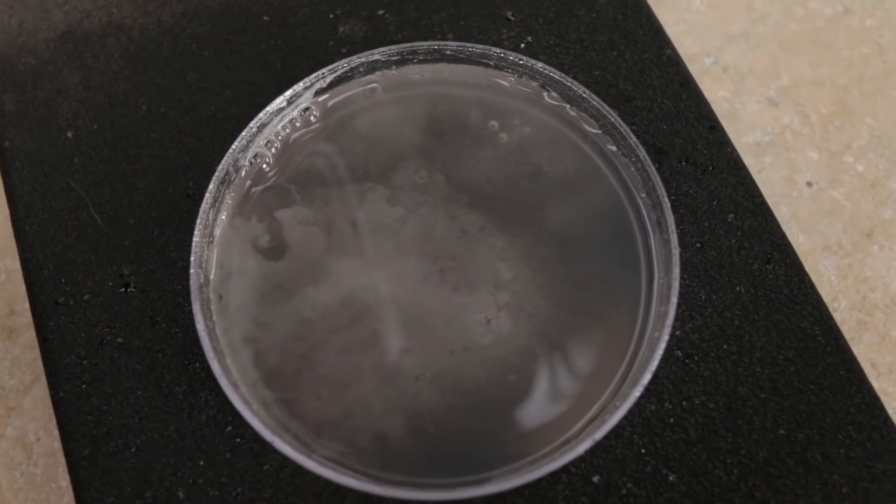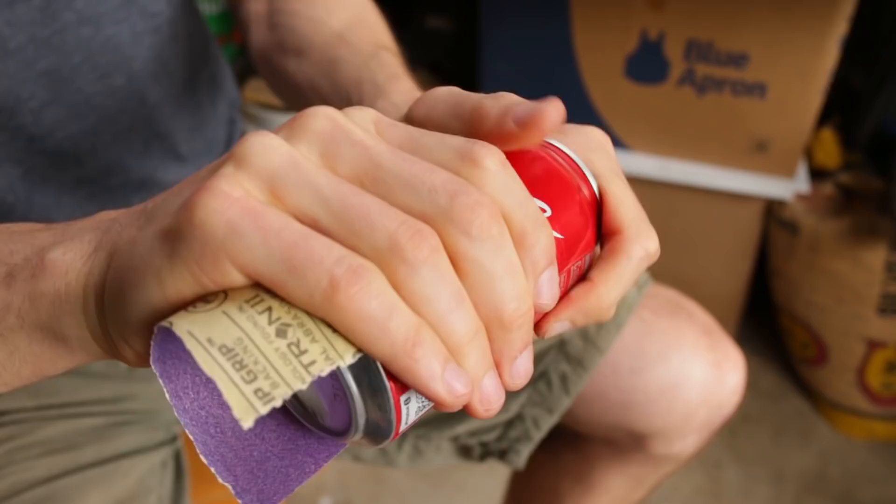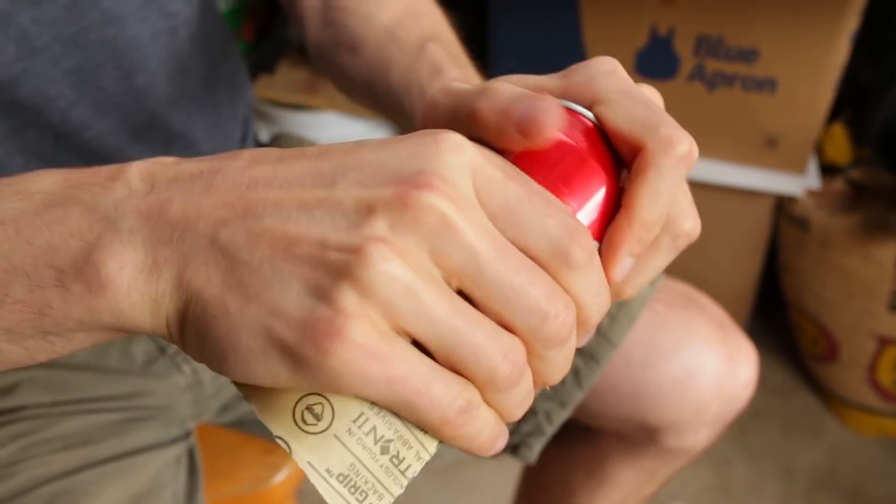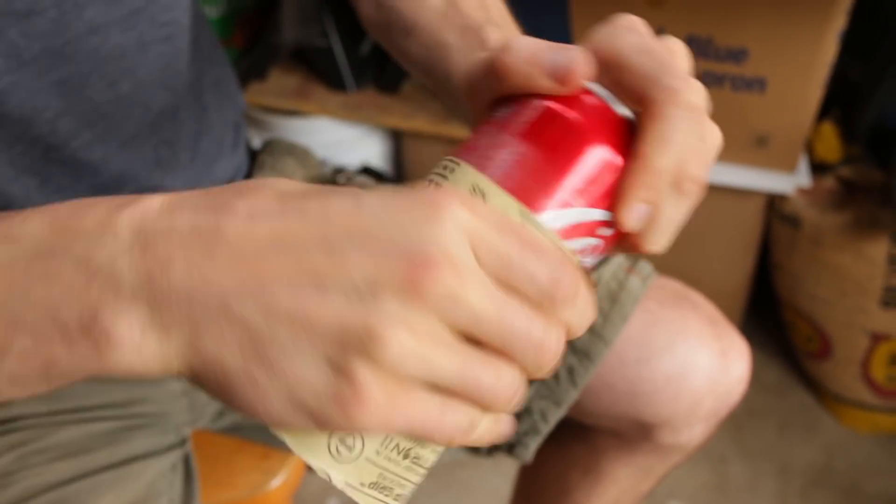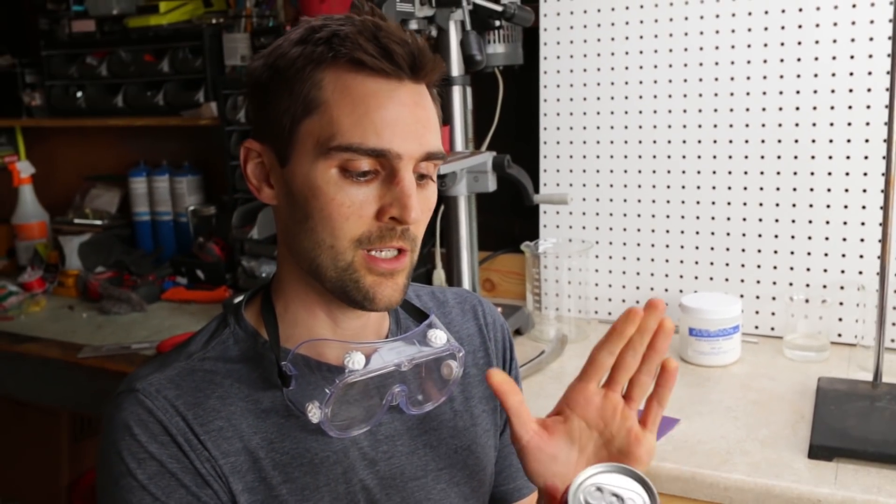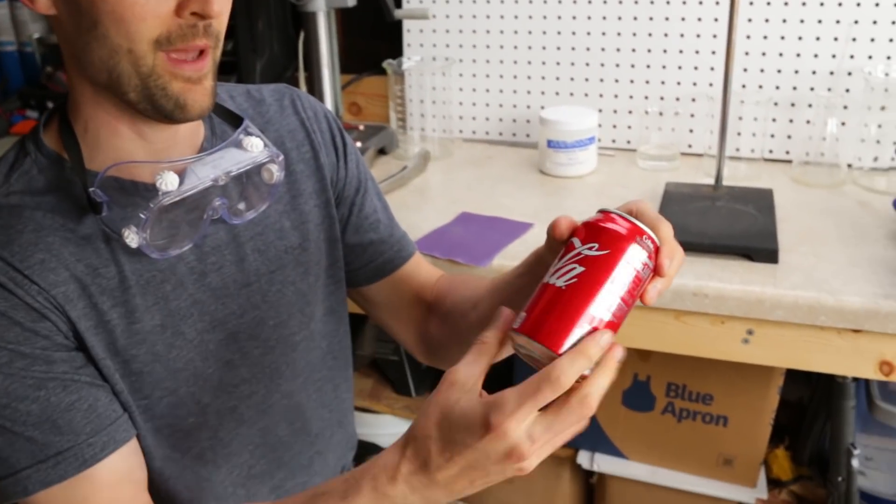Okay so we put a soda tab in sodium hydroxide and it completely dissolved it. There's nothing left. So now let's move over to the coke can. I'm going to sand off the paint on the outside of the aluminum can because in order for the sodium hydroxide to react we really need it to be just on the fresh aluminum. So I gotta remove this paint layer.